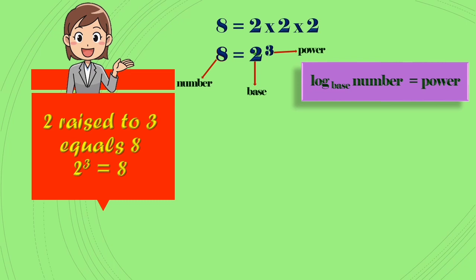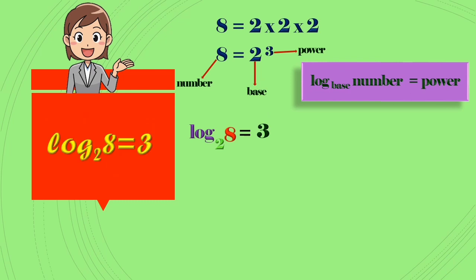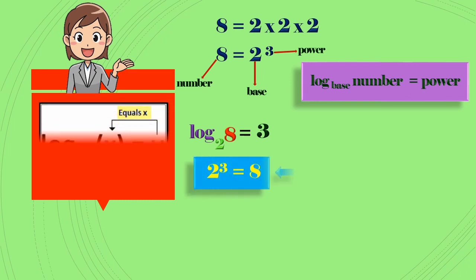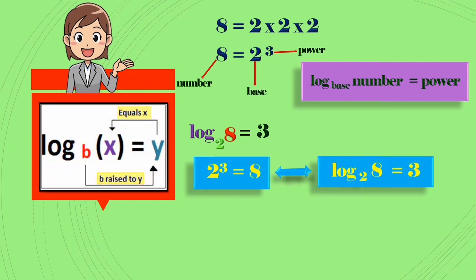So now convert this exponential form into logarithmic form. Then we get log of 8 base 2 is equal to 3. So 2^3 = 8 implies and is implied by log₂8 = 3. Hope you got it. See another example: if 3^2 = 9, then log₃9 = 2.